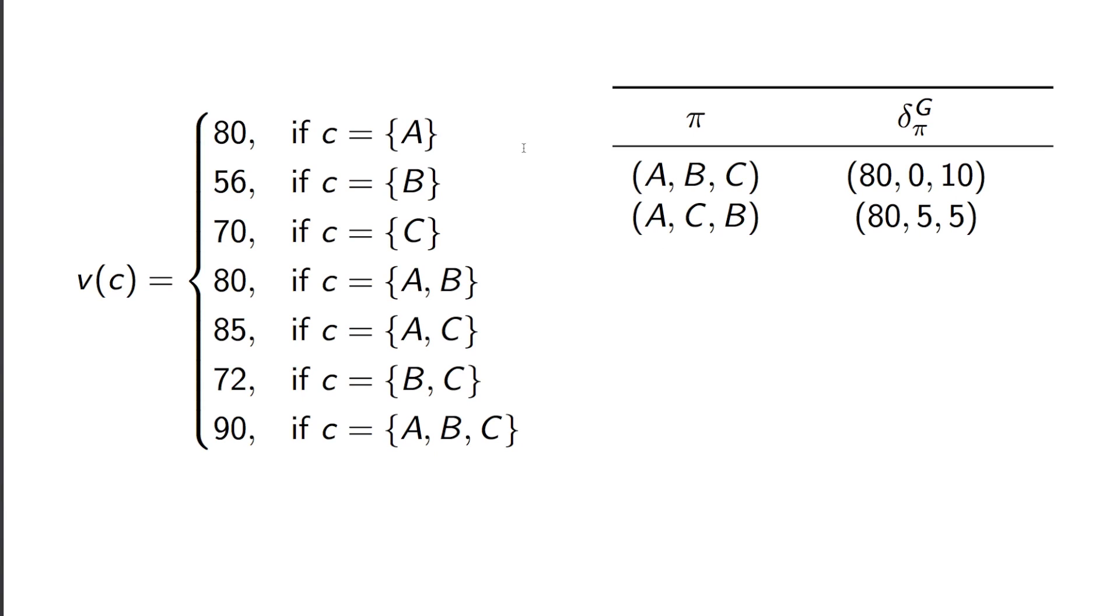If we swap that, we'd see again A pays 80. C, however, now, if we look at A and C, has value of 85. So C now pays 5. And then B has to make up the rest to make it up to 90.